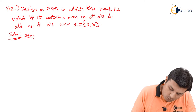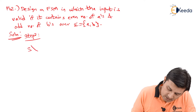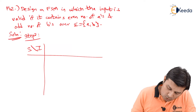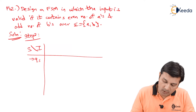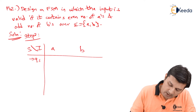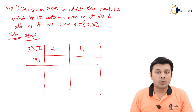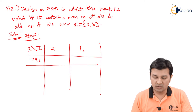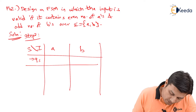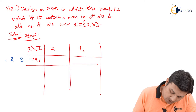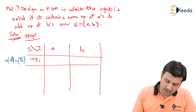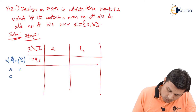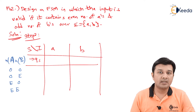Moving directly to step 2 and the state transition function S cross I. The start state is Qs. The input is over the alphabet A and B, so I will write A and B as columns. The possible combinations — those four states we just discussed — are odd-odd, odd-even, even-odd, and even-even. I want to keep track of the number of A's and the number of B's.